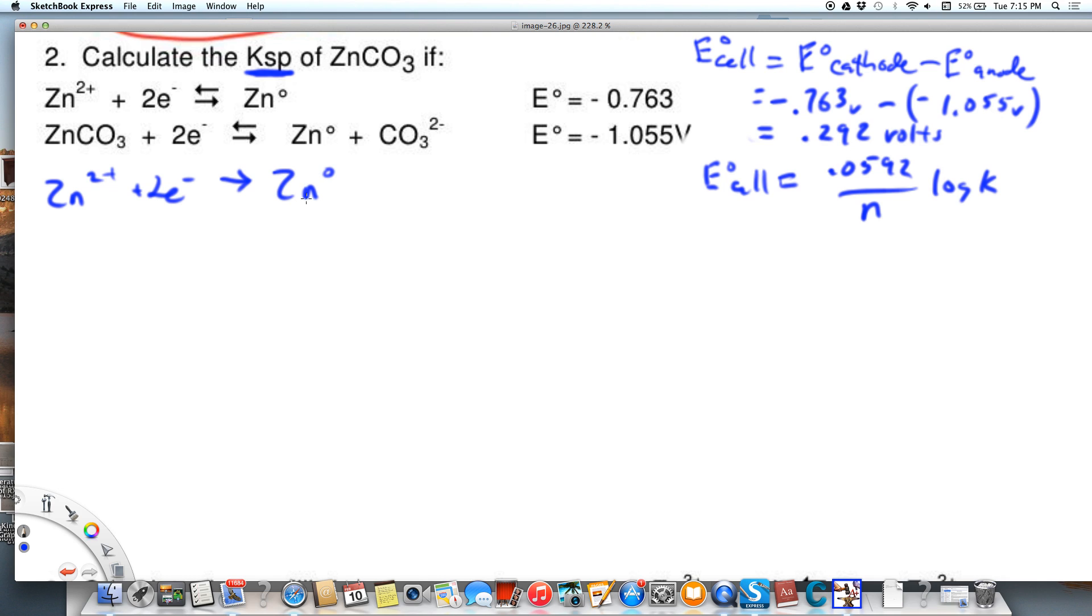So zinc the ion is getting reduced to zinc metal at the cathode, and then our anode reaction is going to be zinc the metal plus carbonate producing zinc carbonate, which we know is a solid, plus two electrons. So it's helpful if we write out the anode and cathode reactions and then let's add them together and see what we end up with.